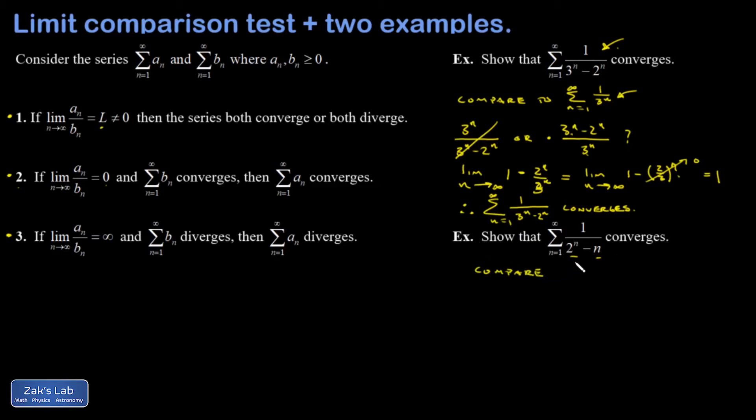We compare to what we think this thing essentially becomes in the large N limit. So I'm going to compare to one over two to the N, which by the way, could be rewritten as one half to the N. And that's a convergent geometric series because the R is less than one.